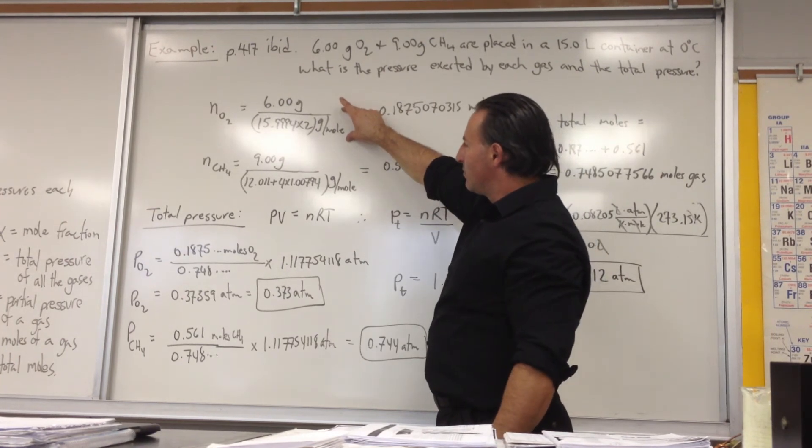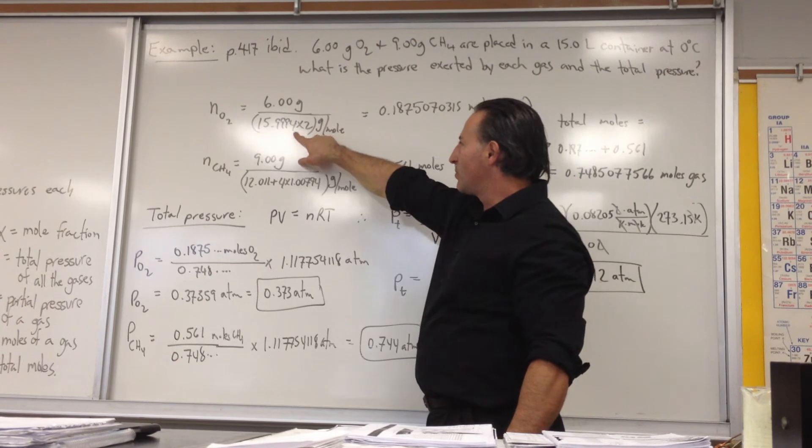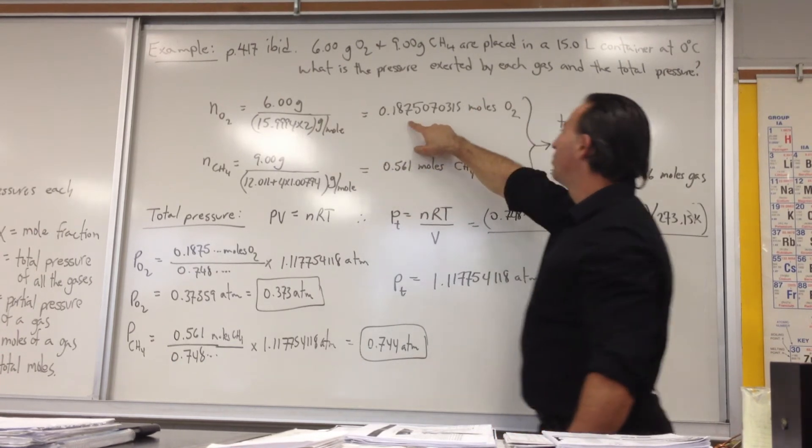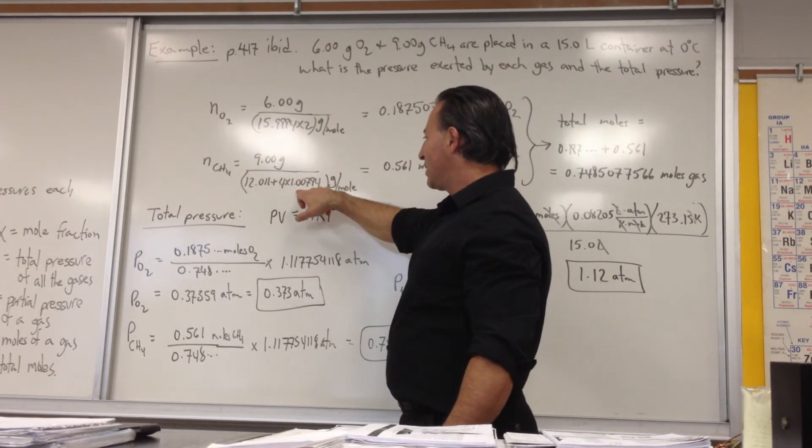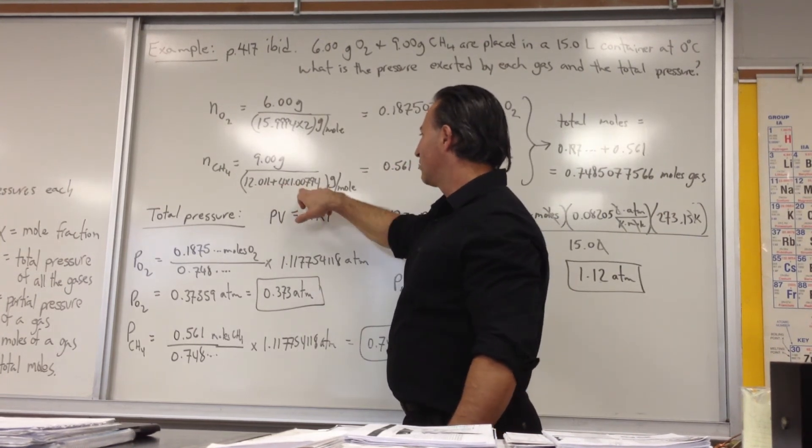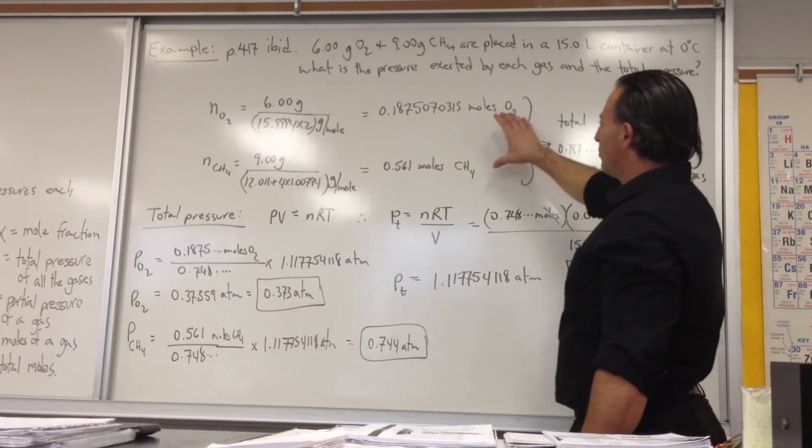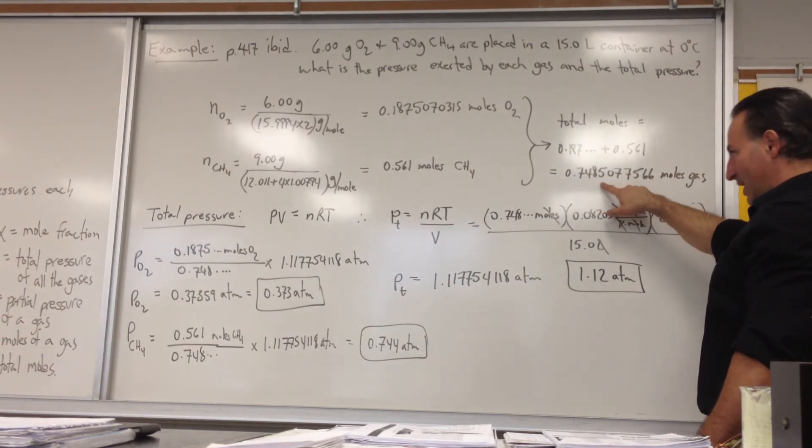So here we see what I'm doing to find out the number of moles of the first gas, oxygen. 6 grams of oxygen, molar mass of oxygen. We recall that oxygen is a diatomic gas. We have 0.18 moles of oxygen. 9 grams of methane. Here's the molar mass of methane calculated. Here's the carbon. Here are the four hydrogen atoms. We get 0.561 moles of methane. The total number of moles is this number plus that number. So we get a total of 0.748 moles of gas.